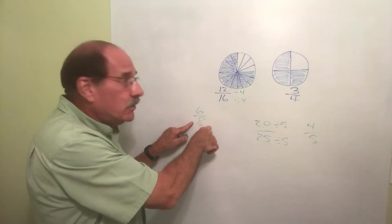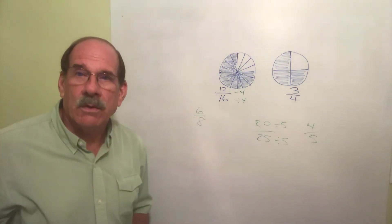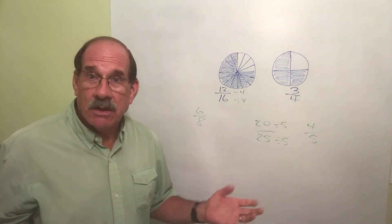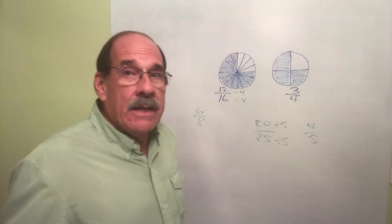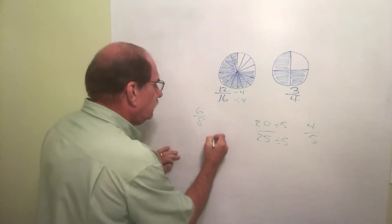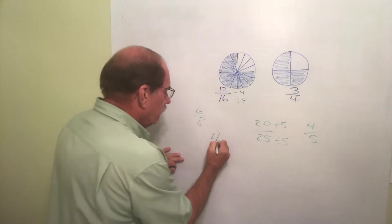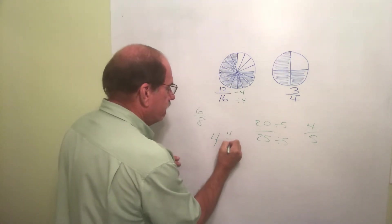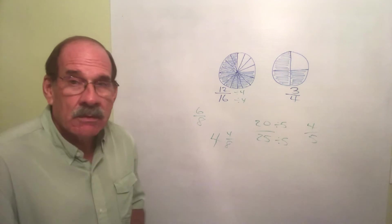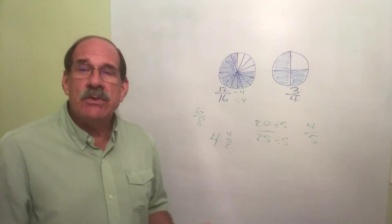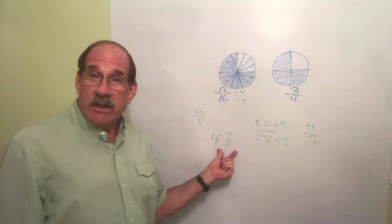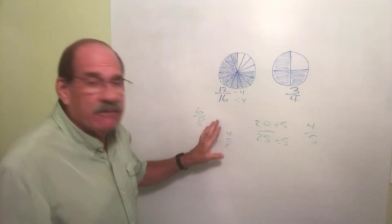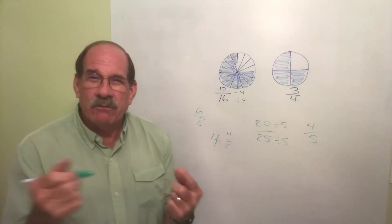What if you had a mixed number like 4 and 4/8? Same thing - you have to reduce to lowest terms. Of course you can't reduce the whole number, reduce the fraction. So just think of 4/8.